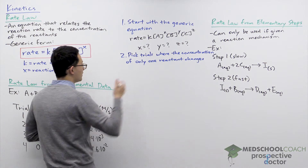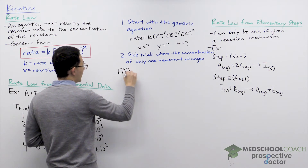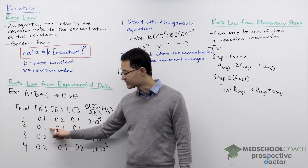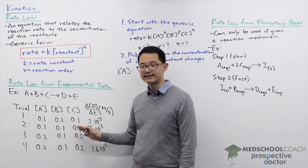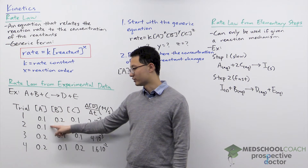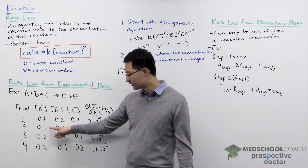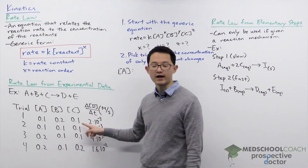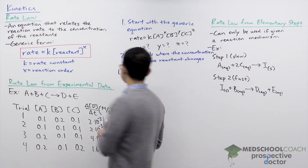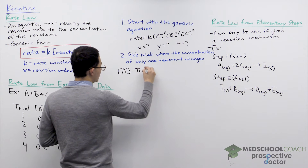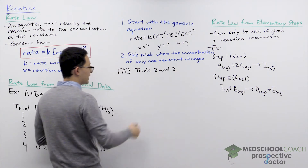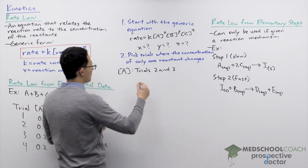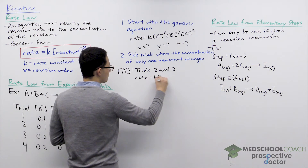Let's start by finding the rate order for A — figuring out what X is. We need two trials where the concentration of A changes but B and C do not. Trials two and three work: the concentration of A was doubled from 0.1 to 0.2, while B and C both remained at 0.1. Since B and C are constant, the change in reaction rate is dependent solely on A.